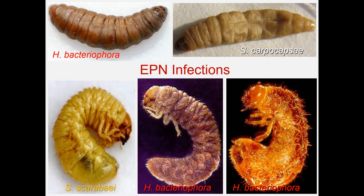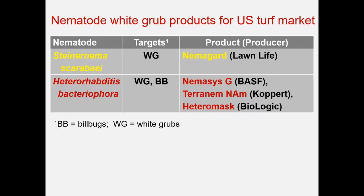The bacteria, as they multiply, produce pigments that can change the color of the host. On the top left, a Heterorhabditis infection turns this caterpillar a nice reddish, can be orange to brick red. On the lower middle and right side, you see a white grub infected. You can see in the middle how the nematodes shine through the cuticle. And on the right side, with the cuticle removed, you see how that host is completely filled with different stages of these nematodes. On the bottom left, you see a grub infected by Steinernema scarabei, which turns the host a kind of tan yellowish color.